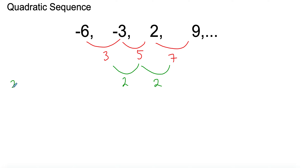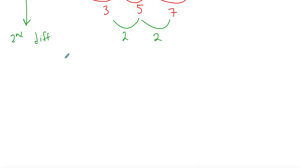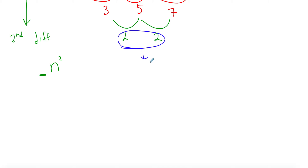If the second difference is constant, then we have a quadratic sequence. Because it's quadratic, you're going to have something to the power of 2, and I want to know what the coefficient is. The coefficient comes from the second difference: take that number and divide it by 2. In this case it's 2 divided by 2, which gives 1, so the coefficient is 1.